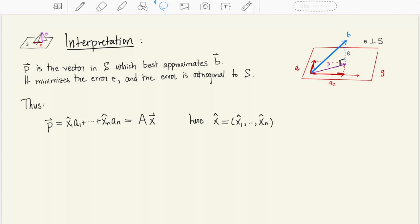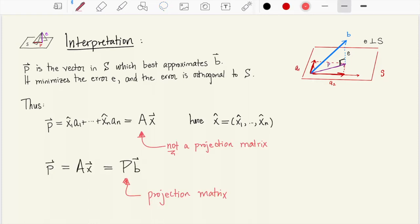If we consolidate this we could write it as matrix times vector: p is A times x hat. Now you'll recall from before that we had a concept of a projection matrix. It's important to note here that A is not the projection matrix. A is not a projection matrix because it is not being applied to the vector b and sending it to the vector p.